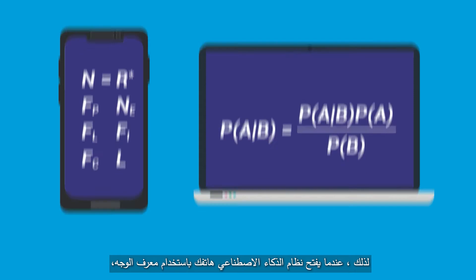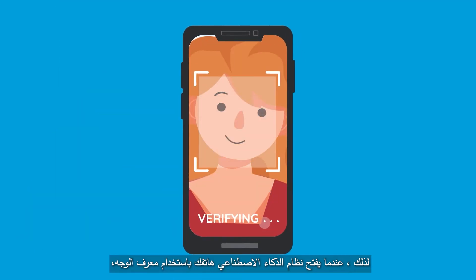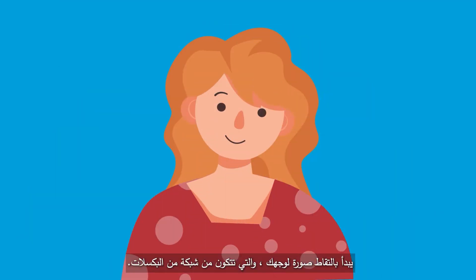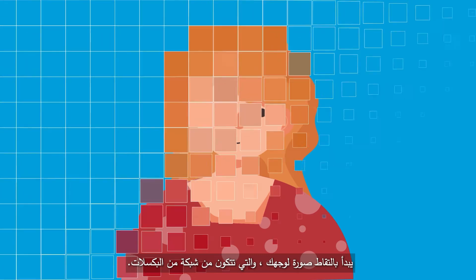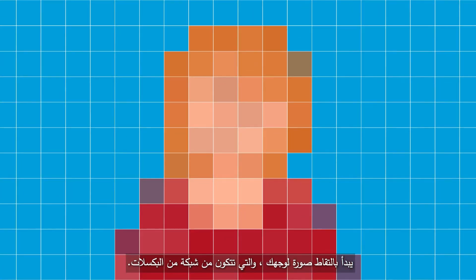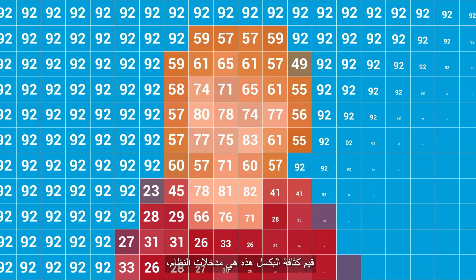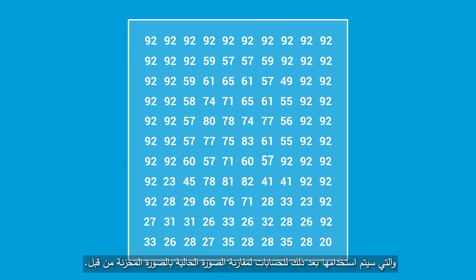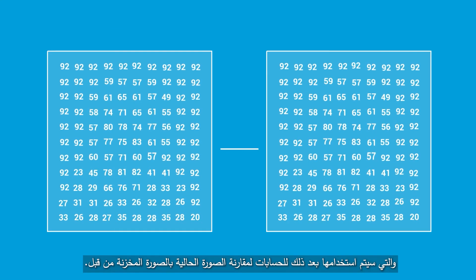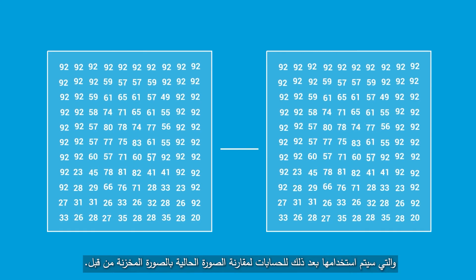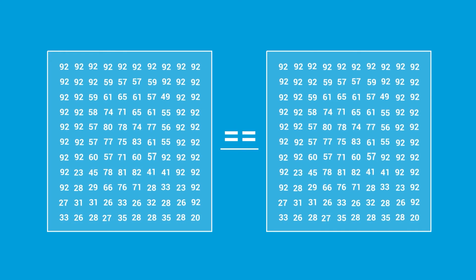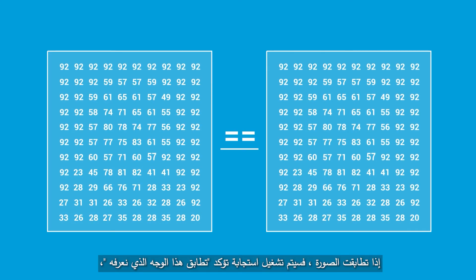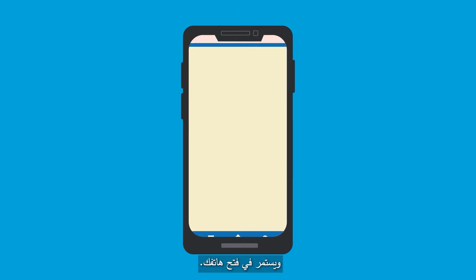So when an AI system unlocks your phone with face ID, it starts by taking a picture of your face, which is composed of a grid of pixels. These pixel intensity values are the input of the system, which will then be used for calculations to compare the current image with the ones stored before. If the values match up, it triggers a response confirming this face matches the one we know, and proceeds to unlock your phone.